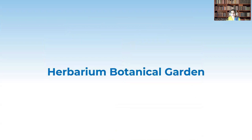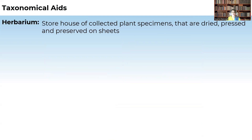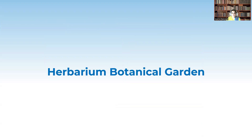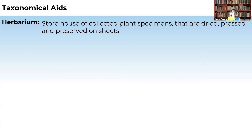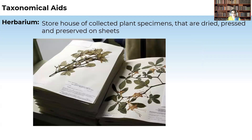One of the taxonomical aids is herbarium. What is meant by herbarium? It is a storehouse of the collected plant specimens which are dried and preserved on sheets. We take the sheets, dry the plant specimens, and attach them to these sheets. So herbarium is like a storehouse of the plant specimens which contain dried and preserved plants on the sheets.